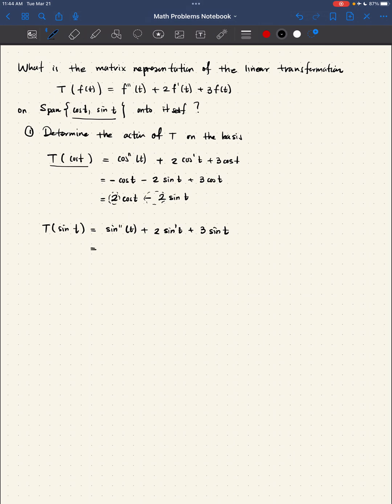Well, the derivative of sine is cosine and the derivative of cosine is negative sine of T plus two times cosine of T plus three times sine of T.